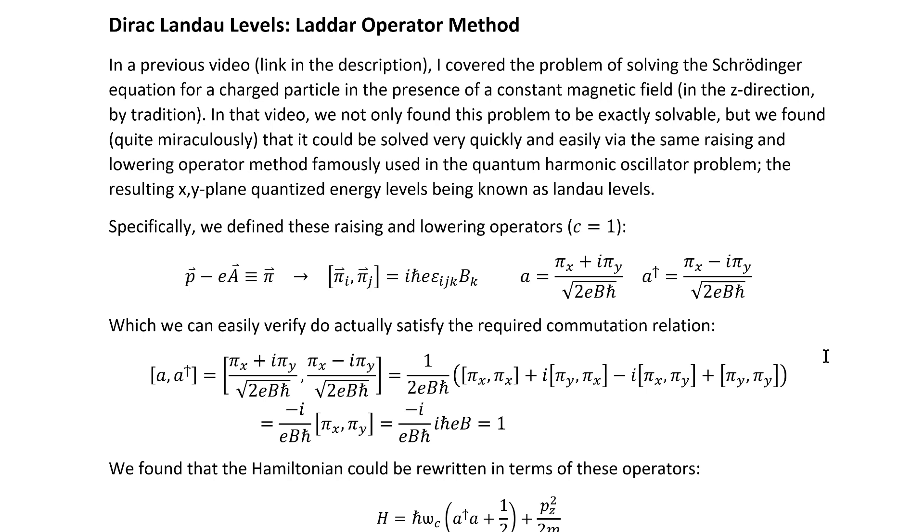In a previous video, link in the description, I covered the problem of solving the Schrodinger equation for a charged particle in the presence of a constant magnetic field in the z direction by tradition. In that video, we not only found this problem to be exactly solvable, but we found, quite miraculously, that it could be solved very quickly and easily via the same raising and lowering operator method famously used in the quantum harmonic oscillator problem, the resulting XY plane quantized energy levels being known as Landau levels.